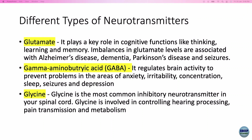There are many types of neurotransmitters. Glutamate, GABA (gamma-aminobutyric acid), and glycine are amino acid neurotransmitters. Glutamate plays a role in cognitive functions like thinking, learning, and memory; imbalances are associated with Alzheimer's disease, dementia, Parkinson's disease, and convulsions. GABA regulates brain activity to prevent anxiety, irritability, concentration issues, sleep disorders, seizures, and depression. Glycine is the most common inhibitory neurotransmitter, mainly present in the spinal cord, and is involved in hearing, brain transmission, and metabolism.